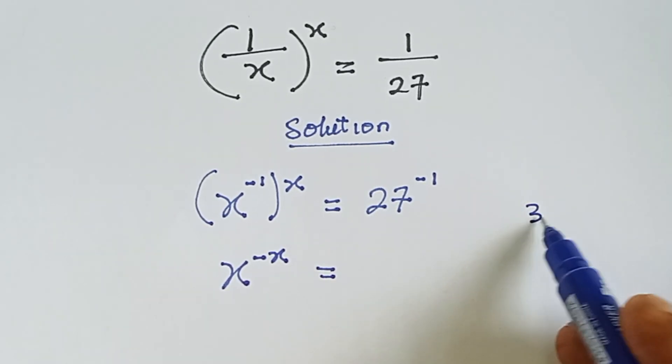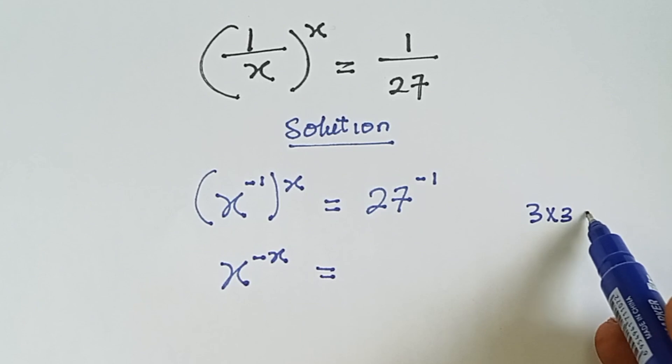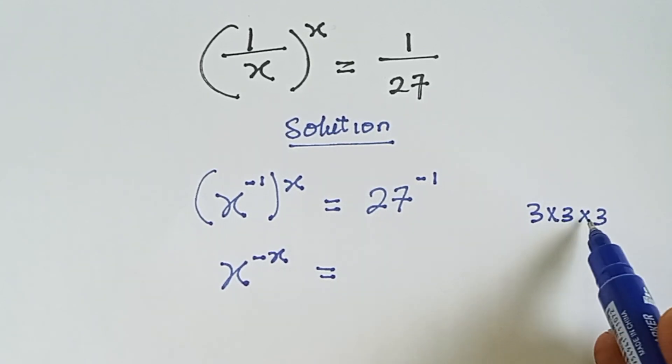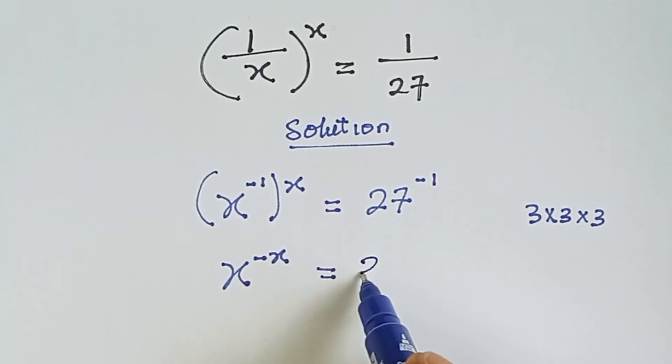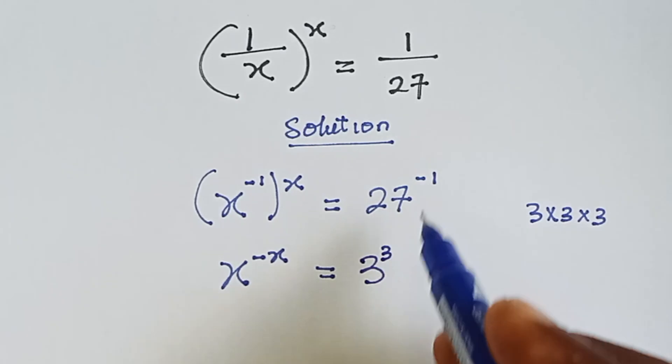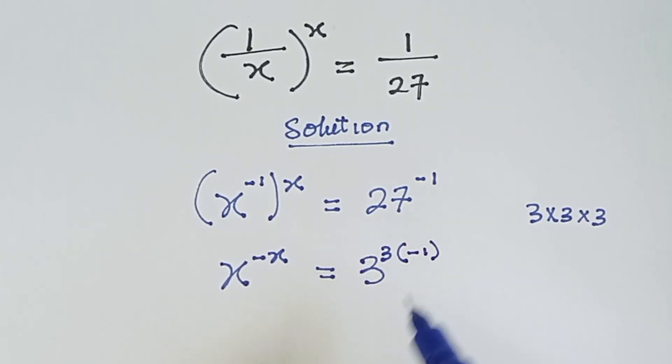It's a multiple of 3. We have 3 times 3 is 9, 9 times 3 is 27. So 27 is 3 raised to the power 3. Then we can write this minus 1 here.